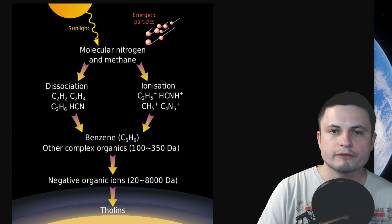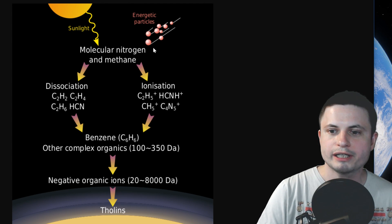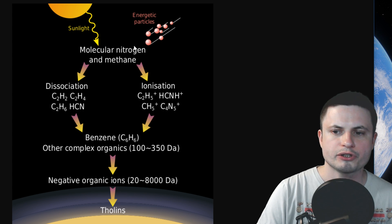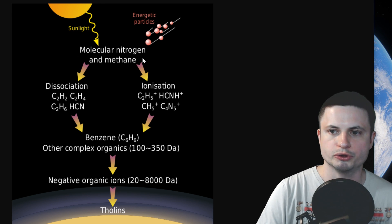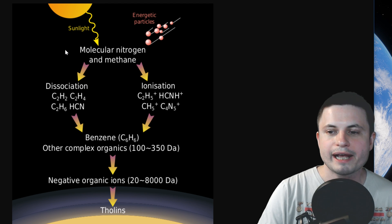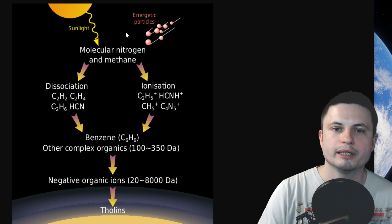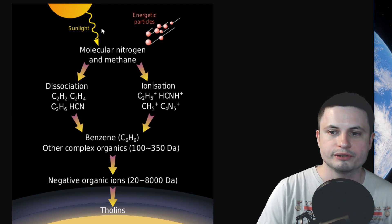And today we believe that for Tholines to form, you essentially need to have some nitrogen source, things like methane will do, and then provide it with a lot of energy, such as, for example, cosmic radiation or sunlight.